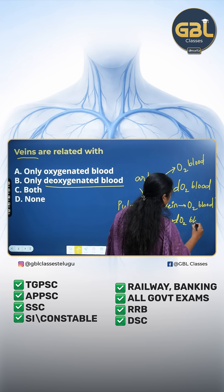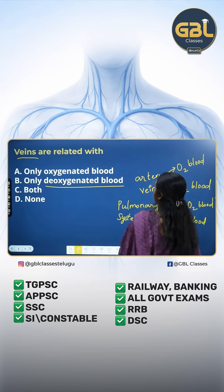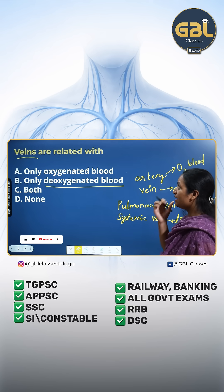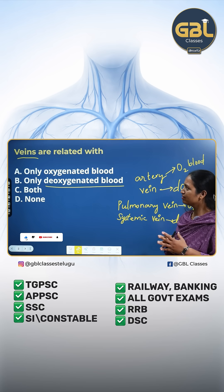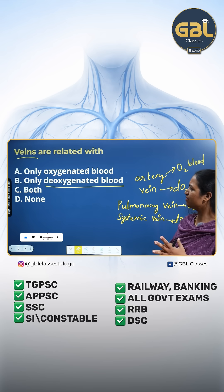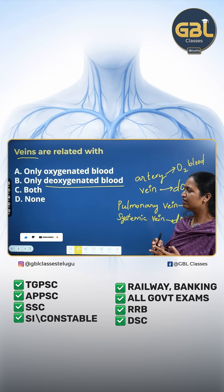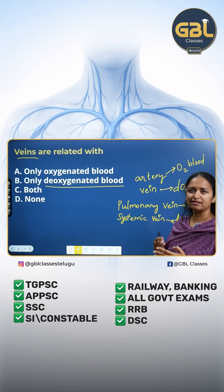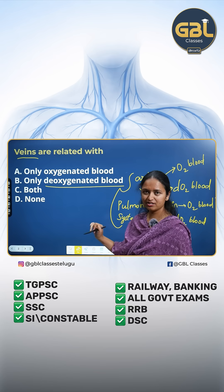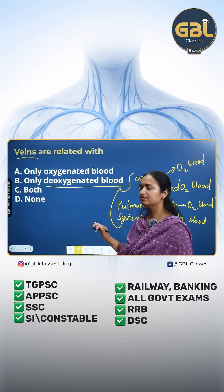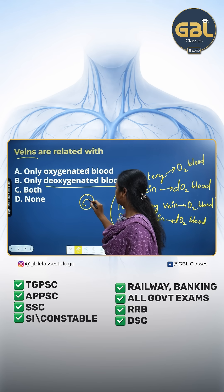Now look at the question again. Veins are related with only oxygenated blood, only deoxygenated blood, option C both, and option D is none. So according to the explanation, the correct answer for this question will be C — both.